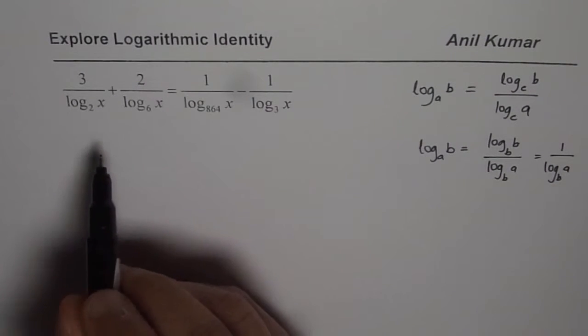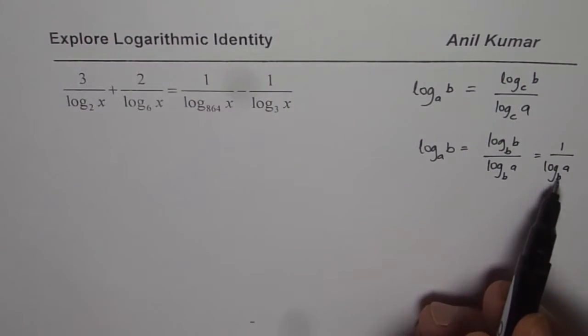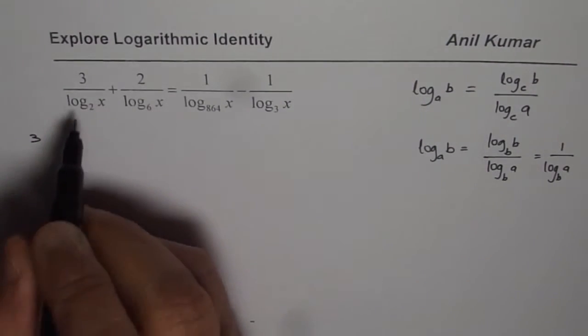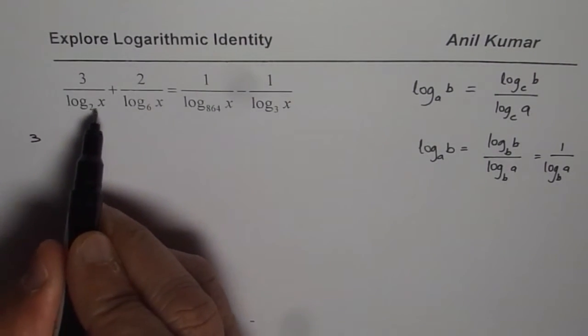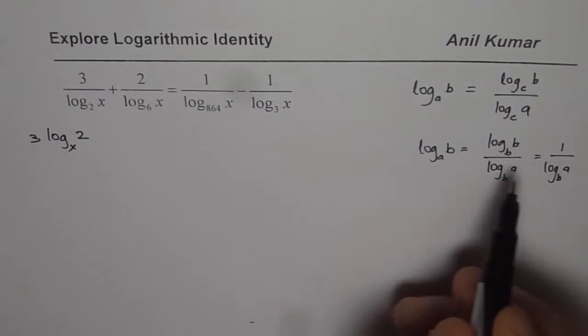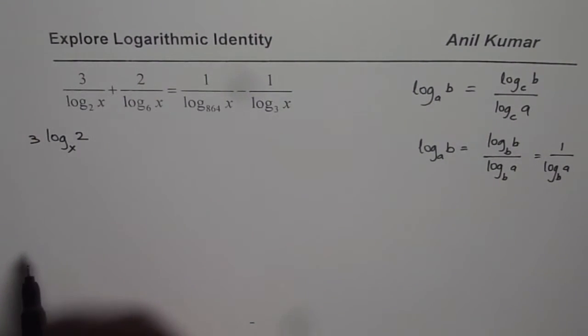So what we will do is on both the sides we will rewrite this reciprocal log in this fashion. That means we could write this as 3 times, so 1 over log 2x could be written as log to the base x of 2. Do you get the point? So we interchange A and B.